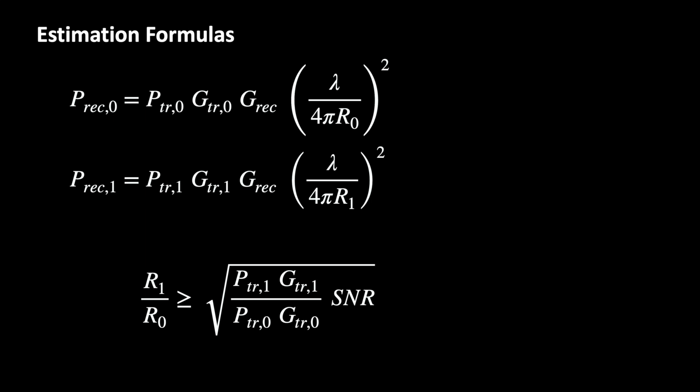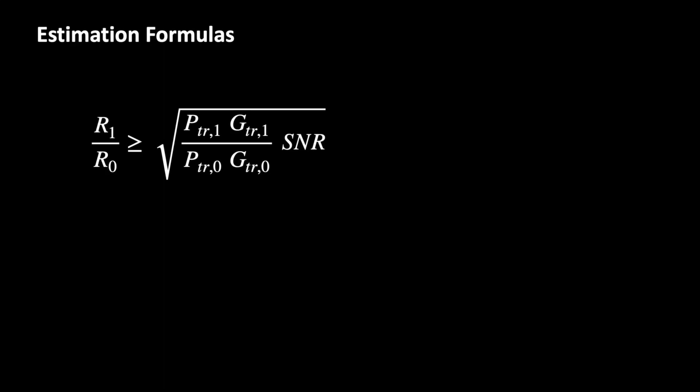R1 divided by R0 must be greater than the square root of this term to avoid interference. In our Wi-Fi example, the transmission power and the antenna gains are the same, simplifying the equation. For an SNR of 10, the distance of an interferer must be at least 3.16 times the distance to the transmitter of the wanted signal.